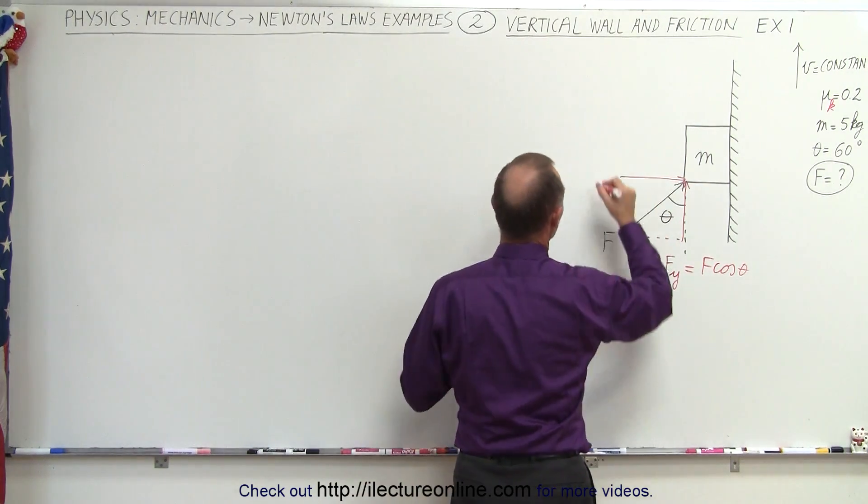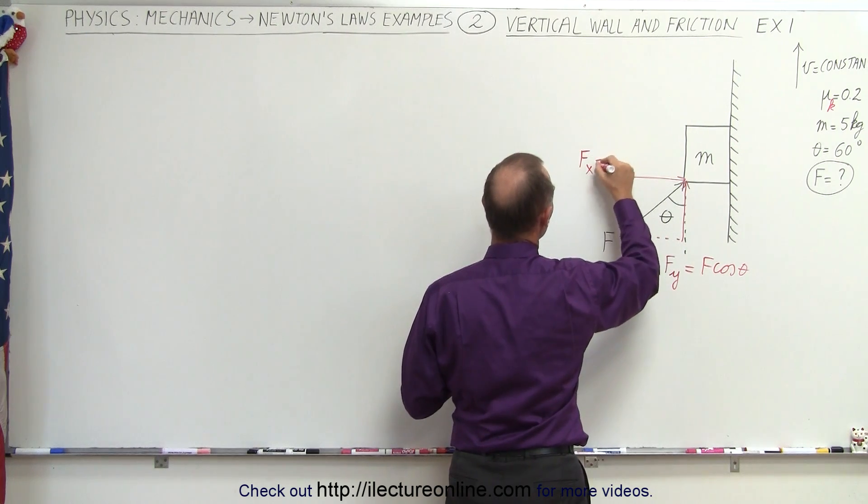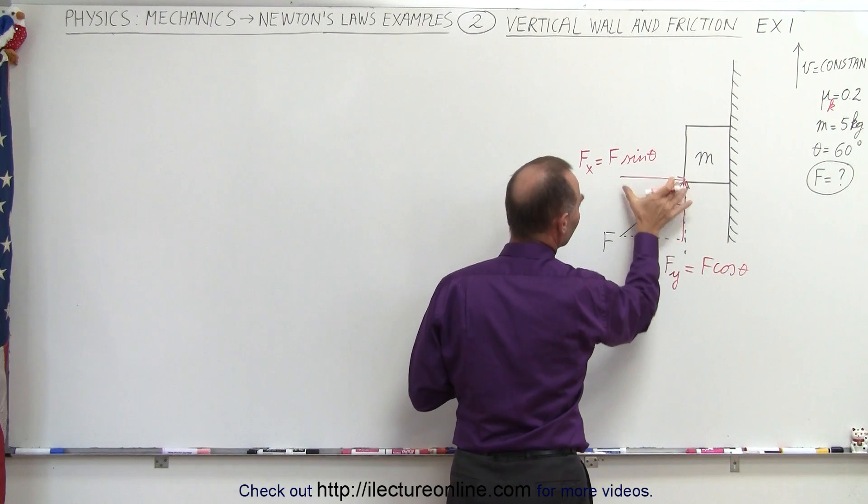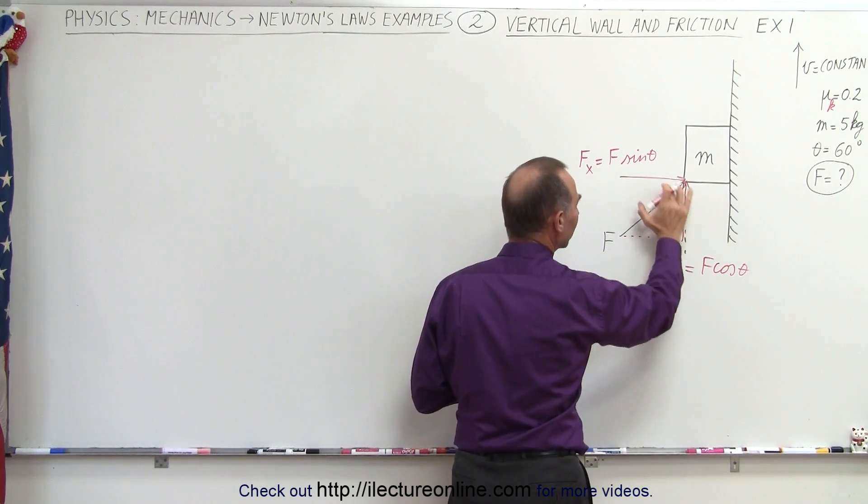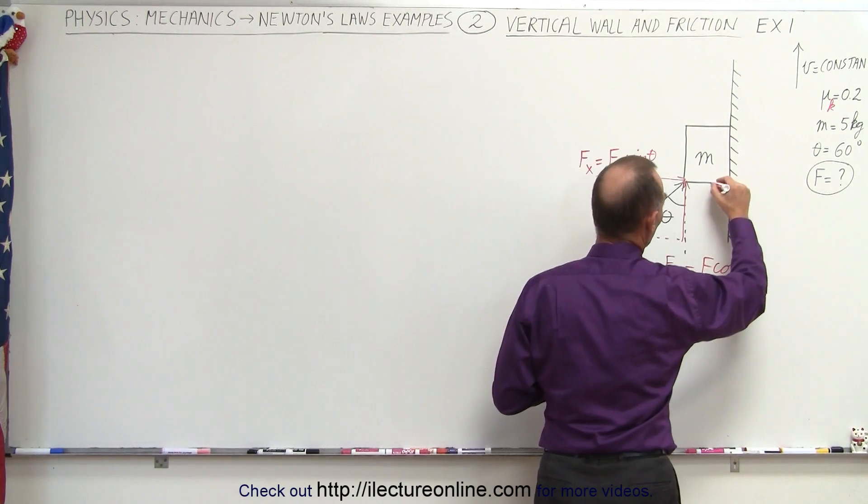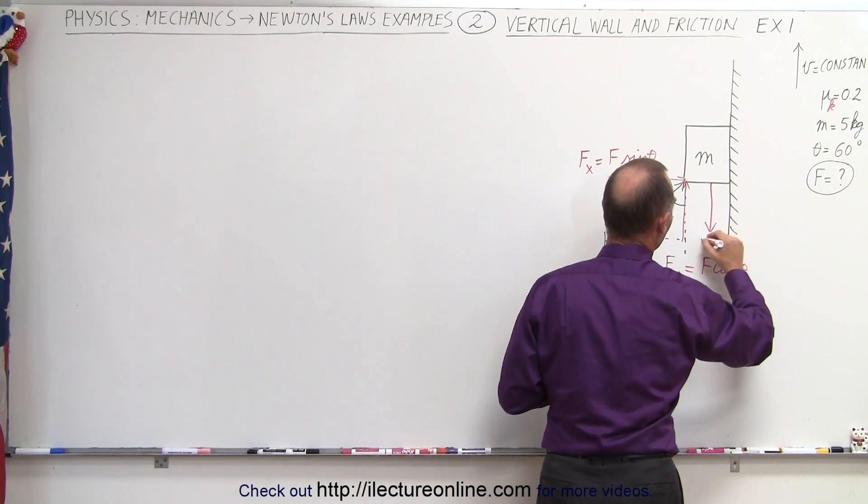On the horizontal direction, F sub x, that's going to be equal to F times the sine of theta, because if we move this component over here, we notice it's opposite to the angle, so therefore we use the sine. In addition to that, we have the weight, the force of gravity pulling down, Mg.